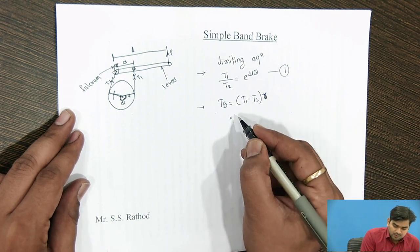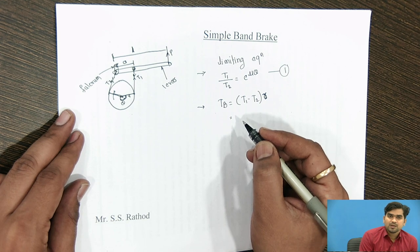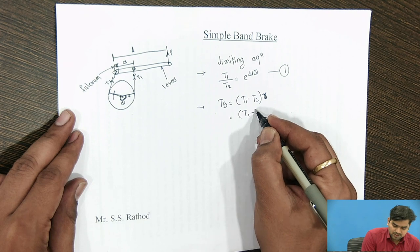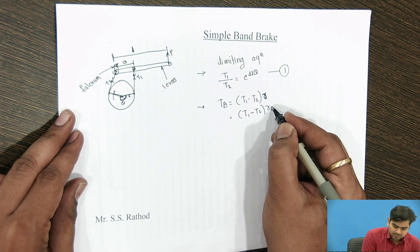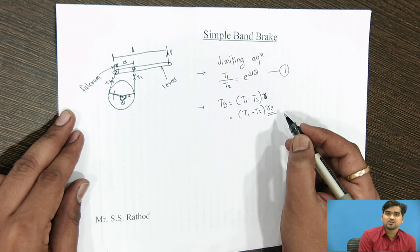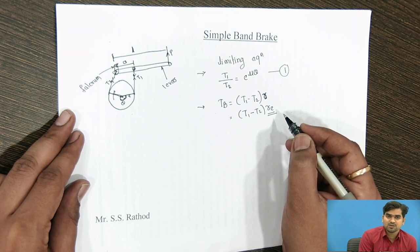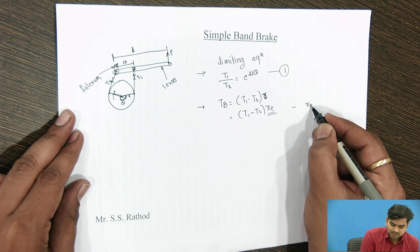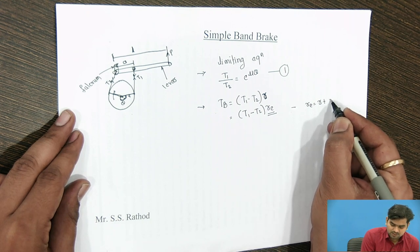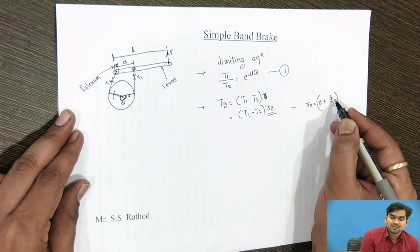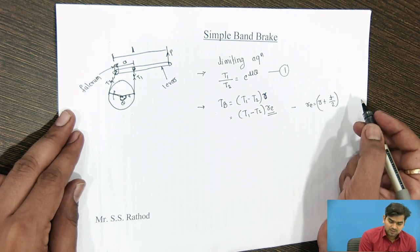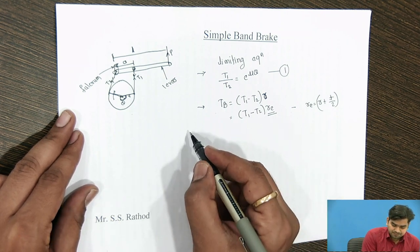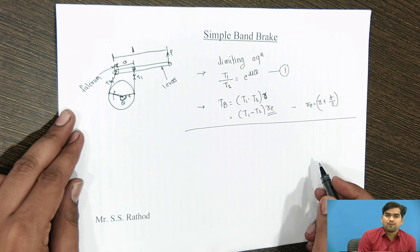If you are given the effective radius, the braking torque equation becomes T1 minus T2 multiplied by Re, where Re is the effective radius. If the thickness of the belt is given, we consider Re equal to R plus t divided by 2, where t is the thickness of the belt. Using this equation we can easily get the value of braking torque, and then we find the value of force P.